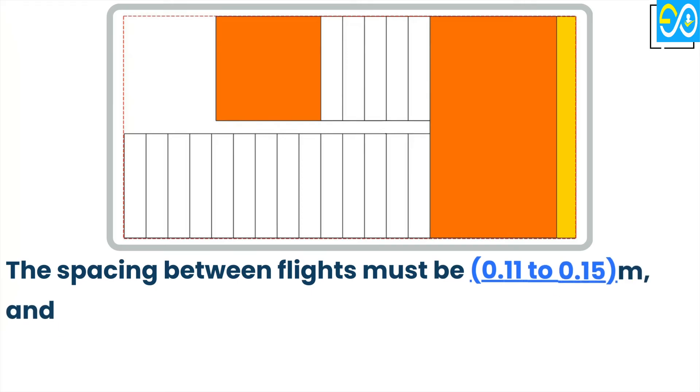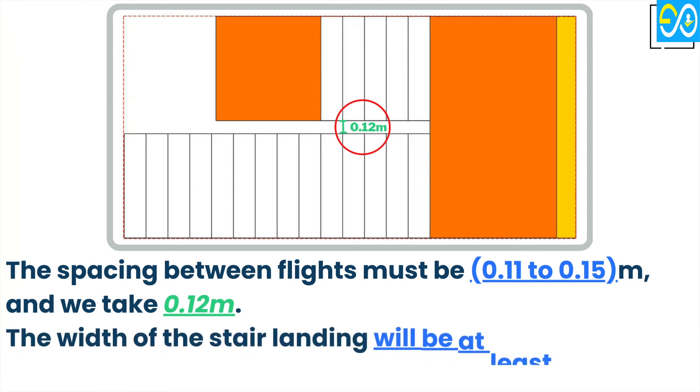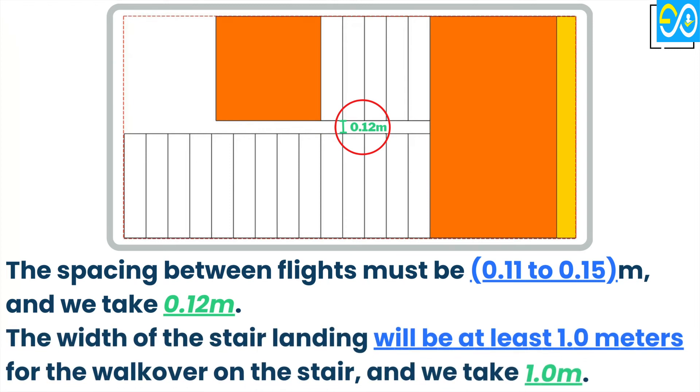The spacing between flights must be 0.11 to 0.15 meters and we take 0.12 meters. The width of the stair landing slab will be at least 1.0 meters for the walkover on the staircase and we take 1.0 meter.